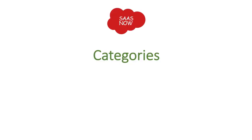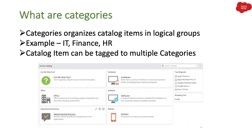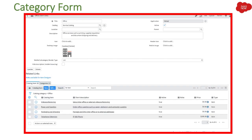In this session we are going to talk about categories. The first question which comes to mind is: what are categories? Categories organize catalog items in logical groups in the ServiceNow Service Catalog. They are like a bucket where you can put different request items you are creating for your end users. As an example, we have IT, Finance, HR, as well as categories like Hardware, Software, Office, and Departmental Services. These categories are not fixed — it's totally up to your organization's decision on how exactly they want to implement categories for end users.